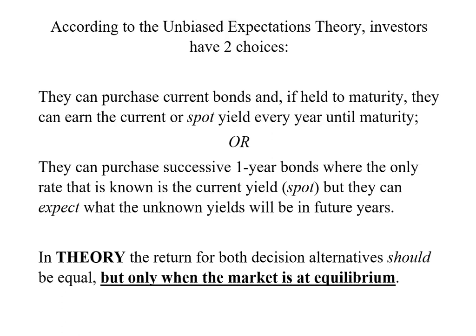Or they can purchase a series of one-year bonds. The only rate that's known is the current yield or the spot yield, but they can expect or predict what the unknown yields will be in the future. So theoretically the return for both investment decisions will be the same or should be the same, but this only holds when the market is at equilibrium.